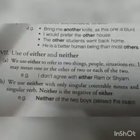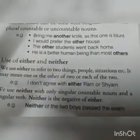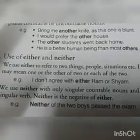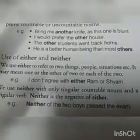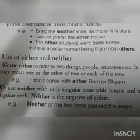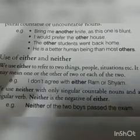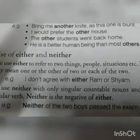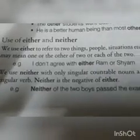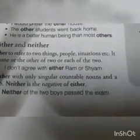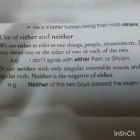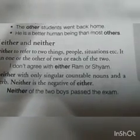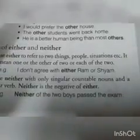Use of either and neither. We use either to refer to two things, people, or situations. It may mean one or the other of the two, or each of the two. Example: 'I do not agree with either Ram or Shyam.' Neither is used only with singular countable nouns and singular verbs — neither is the negative of either. Example: 'Neither of the two boys passed the exam.'